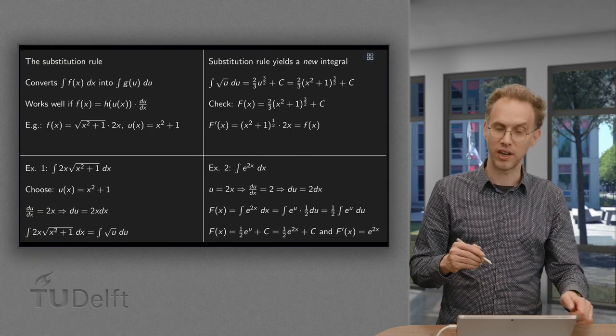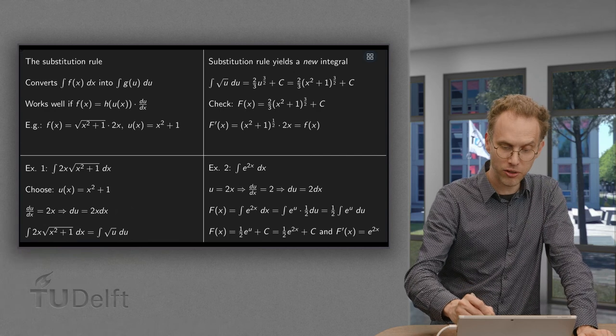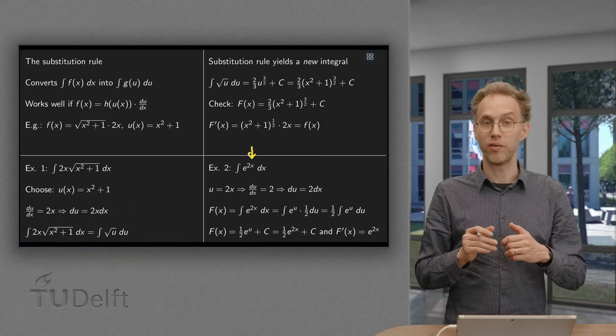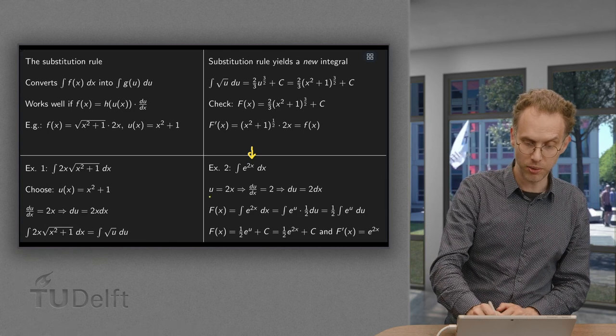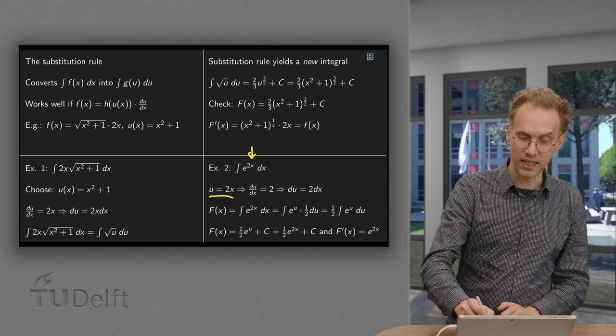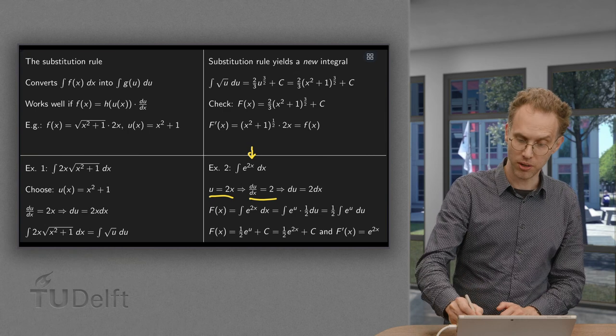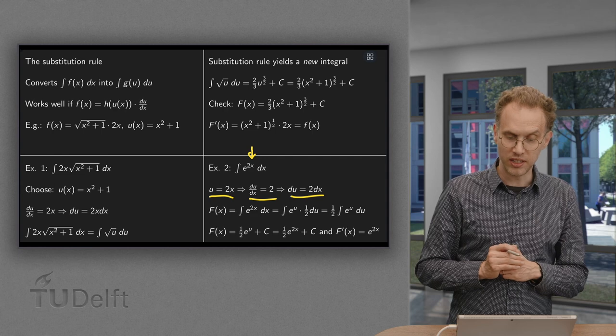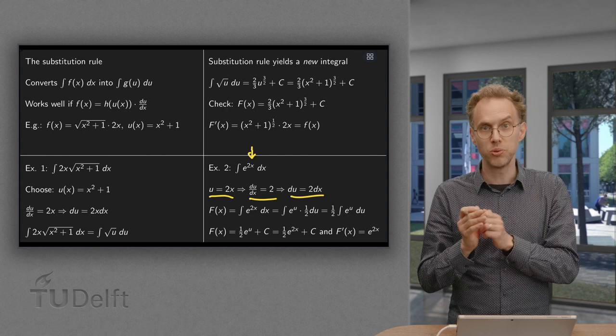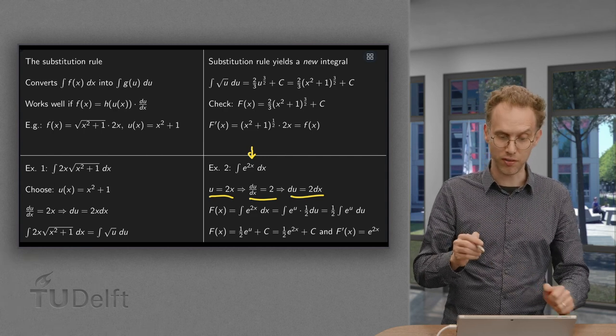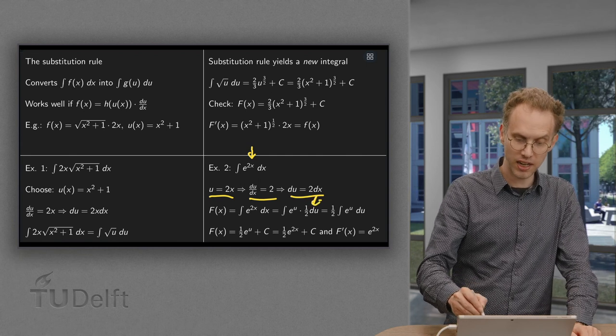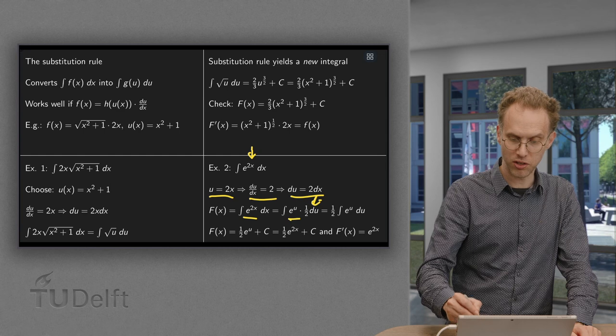Well, so one more, definitely easy example: e to the power 2x, which is not in our list. However, we can use substitution u equals 2x, then du/dx equals 2, so du equals 2 dx. Well, we need dx. du equals 2 times dx, so dx equals 1/2 du. So here we get 1/2 du for the dx, and e to the power 2x becomes e to the power u.